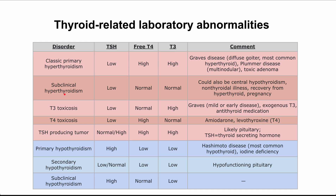Subclinical hyperthyroidism is next. In this case, you'll have normal levels of thyroid hormone, but you'll still have a slightly low TSH. There are a few reasons this can happen: it could be central hypothyroidism, a non-thyroidal illness such as chronic inflammation, recovery from a hyperthyroid disorder like Graves' disease after surgery, or certain cases of pregnancy.